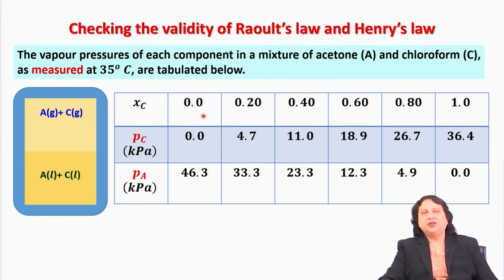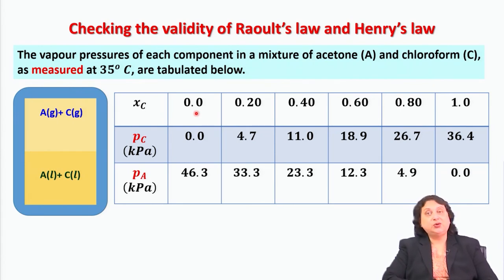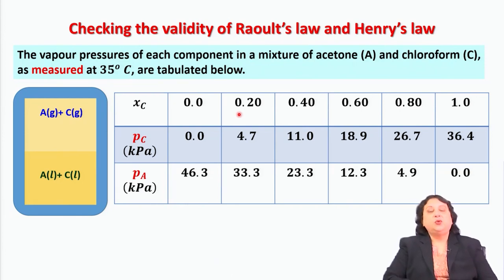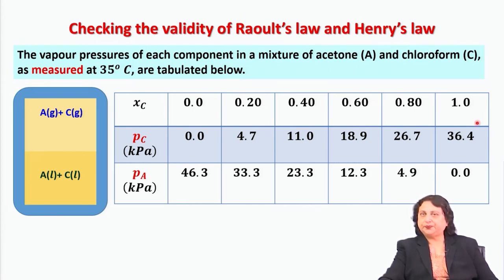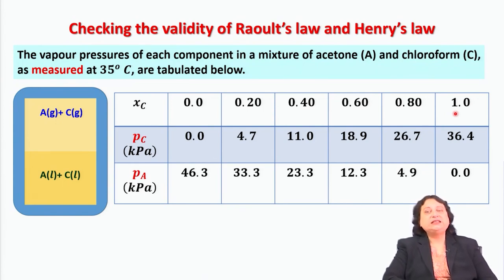For the first solution, x_C equals 0, so x_A equals 1 — this is pure acetone. For the second solution, the mole fraction of chloroform is 0.2, so x_A is 0.8. All 6 solutions are prepared with increasing mole fraction of chloroform from 0 to 1.0, where x_C = 1.0 corresponds to pure chloroform.